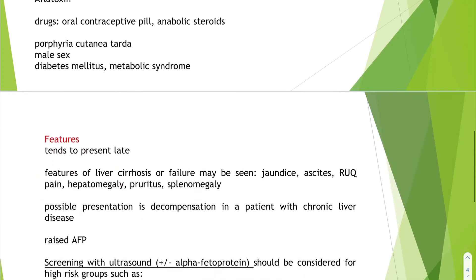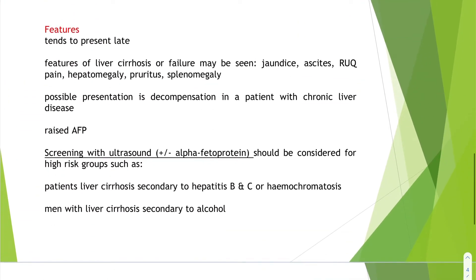Patients with hepatocellular carcinoma tend to present late. Features of liver cirrhosis or failure may be seen — patients can present with jaundice, ascites, right upper quadrant pain, hepatomegaly, pruritus, and splenomegaly. A possible presentation is decompensation in a patient with chronic liver disease, or sometimes there is only a raised alpha-fetoprotein.